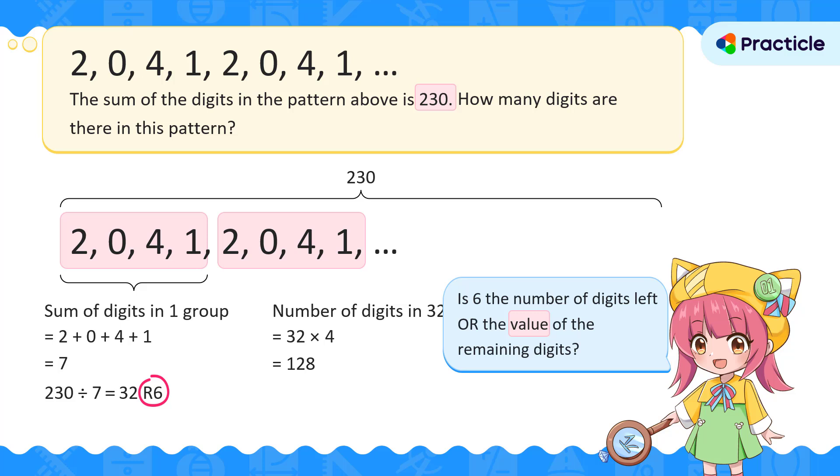In other words, the number of digits at the end of this pattern will be less than 4. Let's look at a group of 4 digits. How many digits add up to 6?